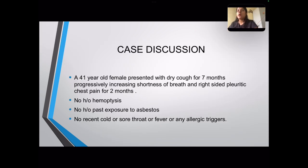Case discussion. A 41-year-old female presented with a dry cough for 7 months, progressively increasing shortness of breath, and right-sided pleuritic chest pain for 2 months.